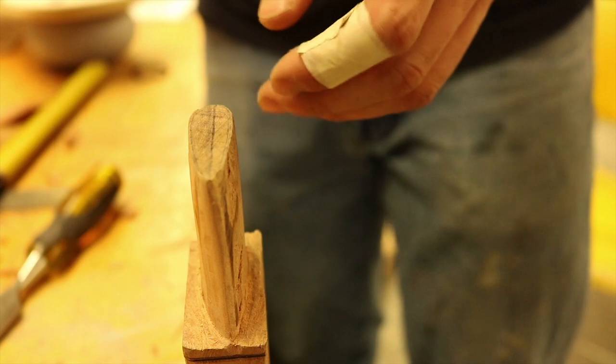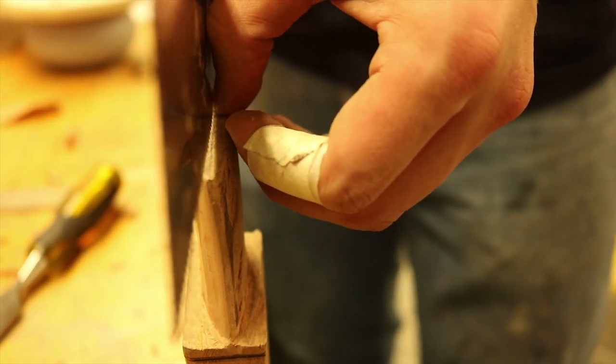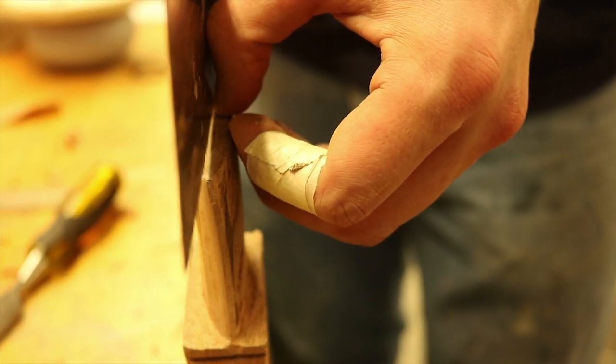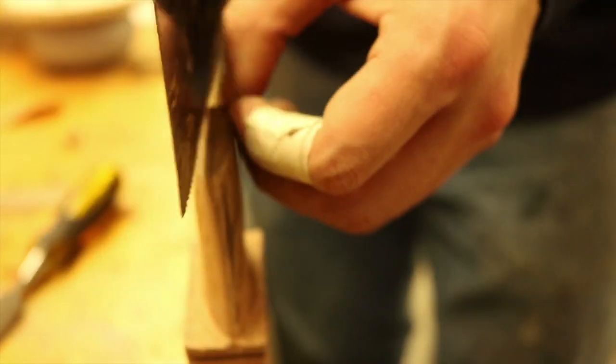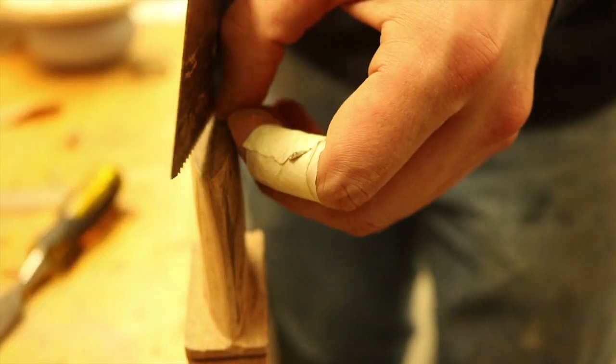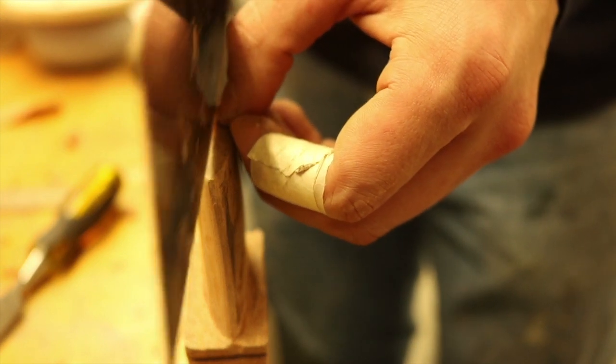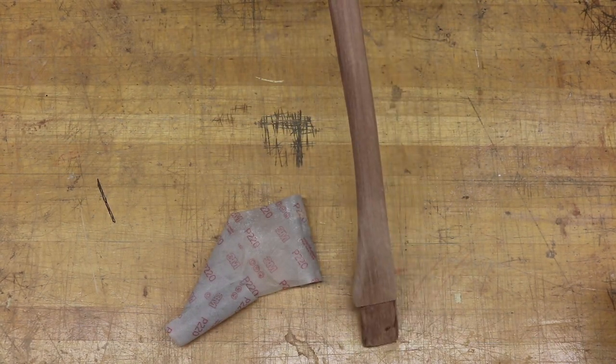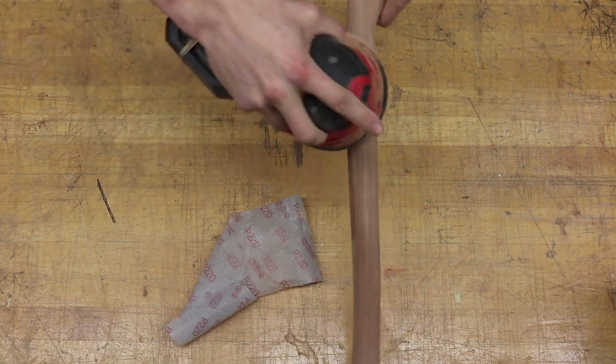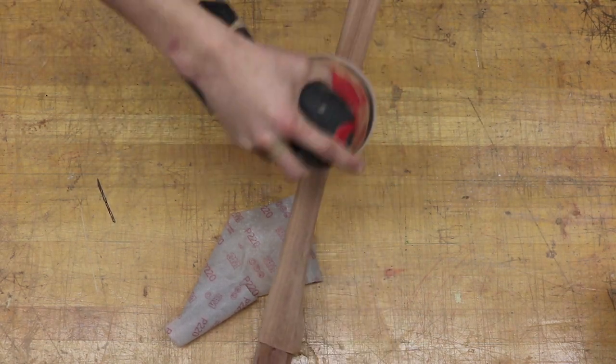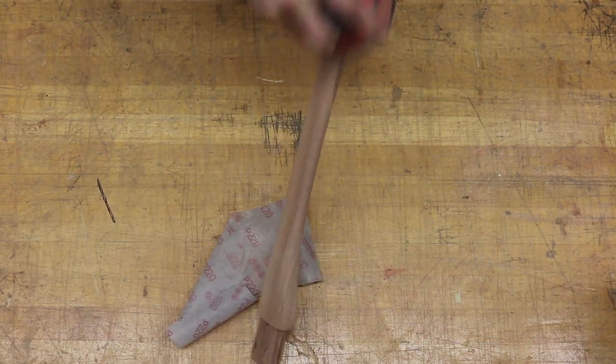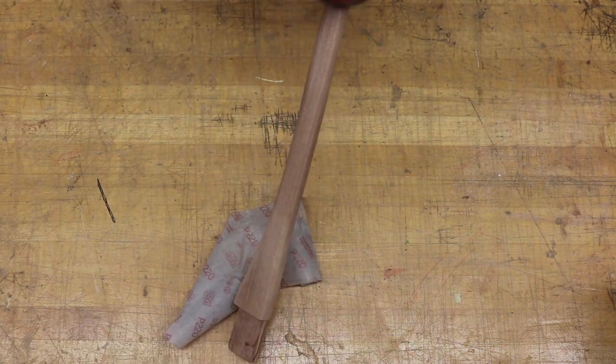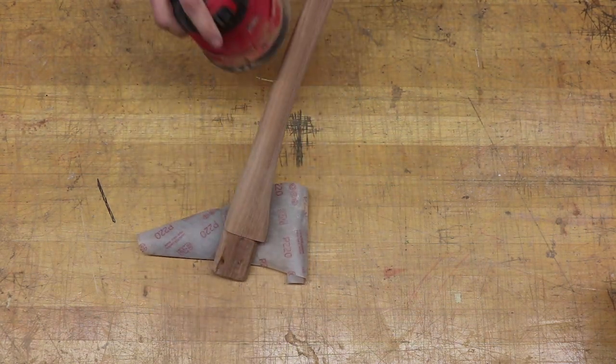I'm using a rasp to finish it out here, and now we're all set with the handle. Just giving it one final sand. Obviously in between the filing and now I've used a bunch of different grits to smooth it out, but just finishing up with 220 and a little bit of work from the orbital sander.